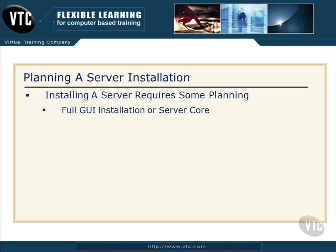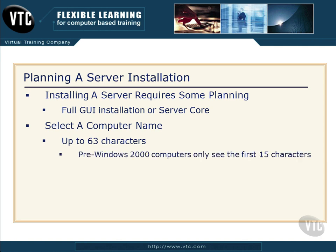If you don't know what Server Core is, we'll talk about it later. Next, you need to already select a computer name for this new server before you install it. That name can be up to 63 characters — make sure you remember that. And if you have any pre-Windows 2000 computers, meaning Windows NT, Windows 95, or 98, those will only see the first 15 characters, so keep that in mind.